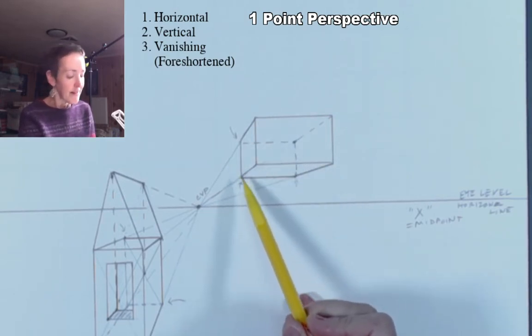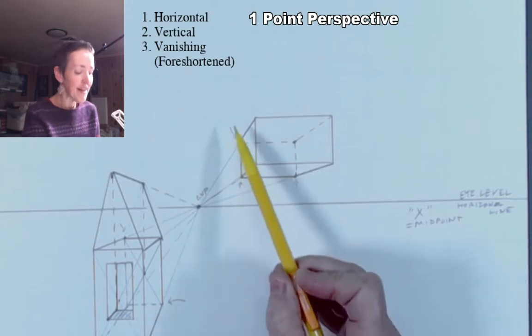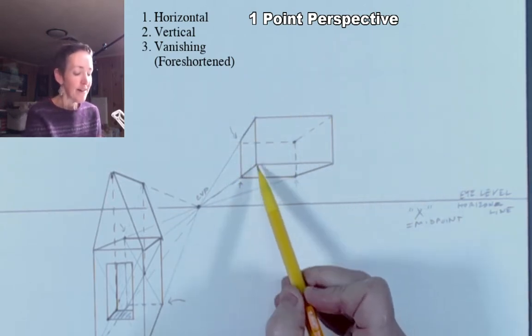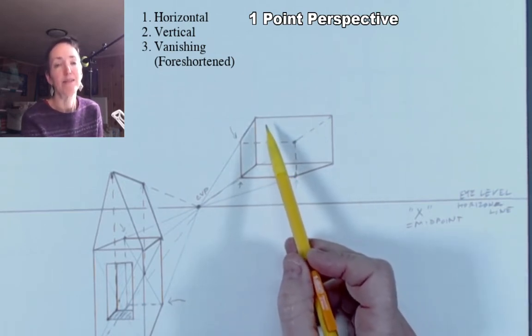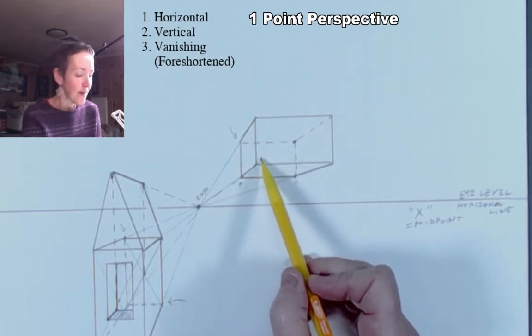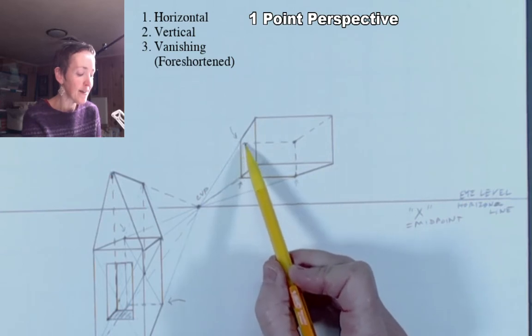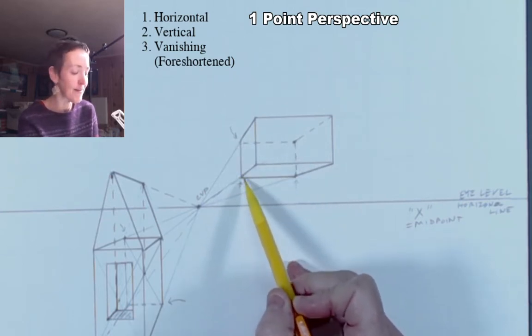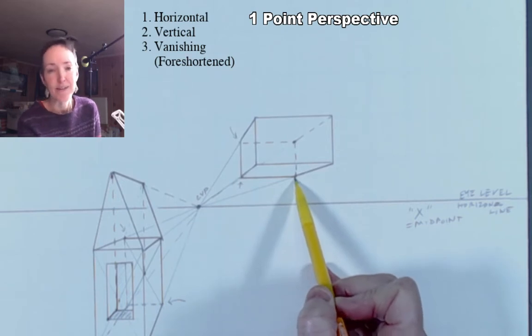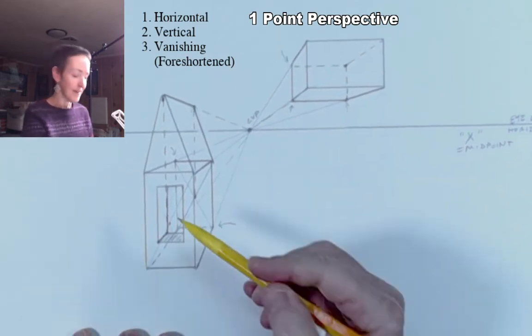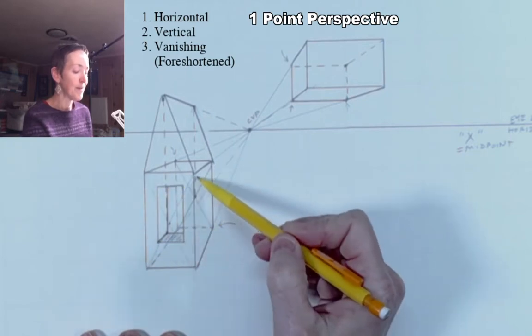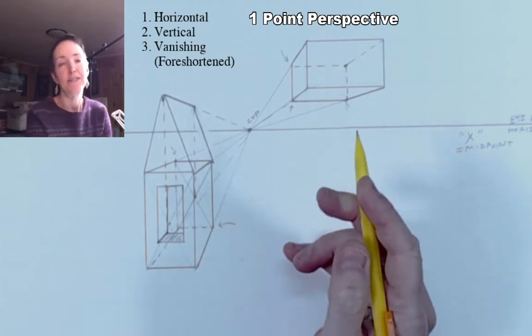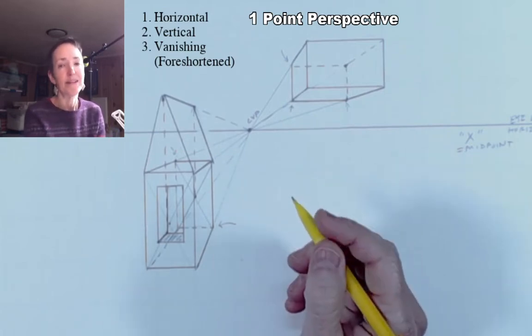So when you're getting confused, if you've got too many lines, the way to know which part of the box is closest to you is whichever rectangle is the larger one. That's the one that's closer to you. So the larger one should be a solid line. The smaller one, you could start out with dotted lines and then just darken the parts that end up being visible later. Same thing happened here with this house. The larger rectangle was the one that we would darken in. The smaller one, which is the back plane of the shed, should be mostly dotted lines.